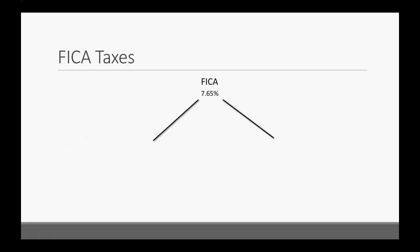Let's work through a FICA tax example problem. Before we get to the problem, let's talk about what FICA taxes are. Your FICA tax rate is 7.65% — but where did that come from? It's made up of Medicare, which is 1.45%, and Social Security, which is 6.2% up to $127,200 of gross earnings in a year. When you add up those two percentages, that's how you get the 7.65% for FICA taxes.